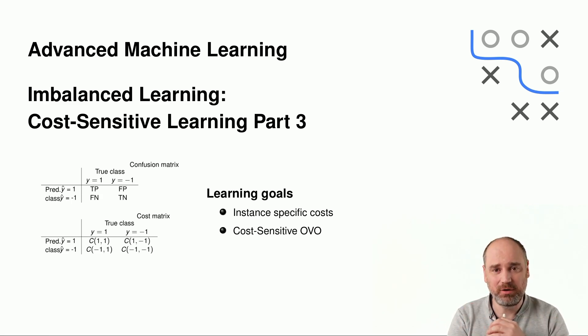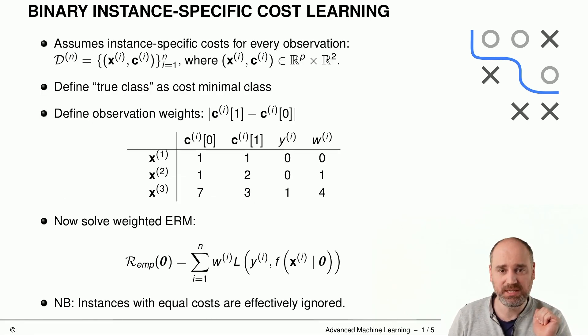And we'll then study a very simple but again model-agnostic algorithm, which is called cost-sensitive 1 versus 1, and which is a nice reduction principle to weighted binary classification. It makes most sense to directly dive into the slides and see how instance-specific costs look like. So how is that task specified?